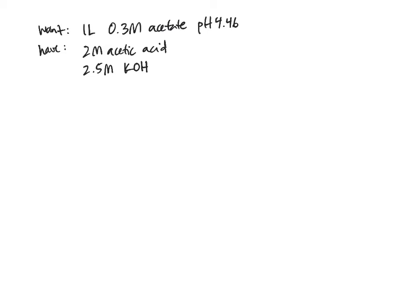Let's do one more question to practice using the Henderson-Hasselbalch equation to make buffers. In this problem, we want to make one liter of a 0.3 molar solution of acetate buffer with a pH of 4.46. That's what we want to create for an experiment that we're doing in lab, but what we have to work with is a 2 molar acetic acid solution and a 2.5 molar KOH basic solution. And as we just calculated, the pKa of acetic acid is 4.76.